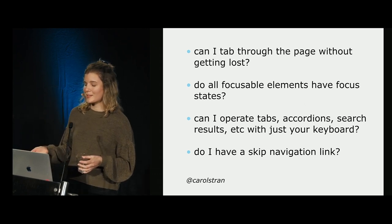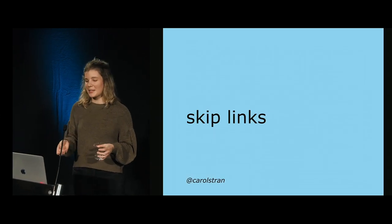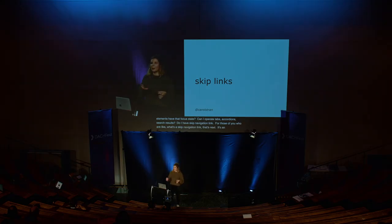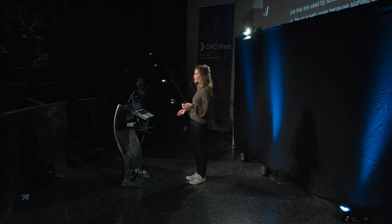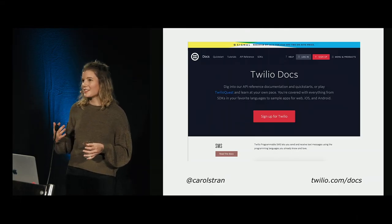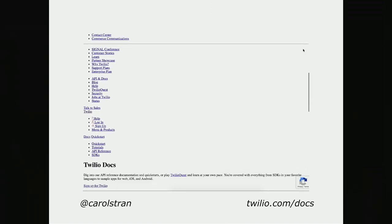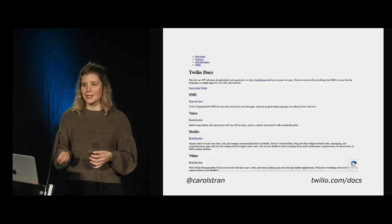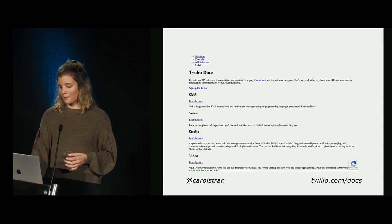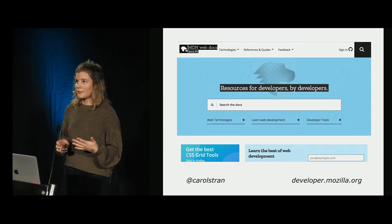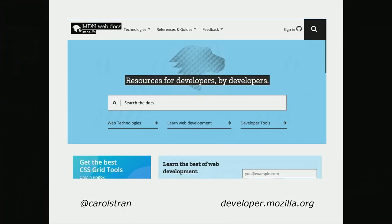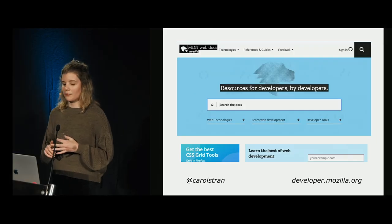Do I have a skip navigation link? Skip links are internal page links mainly used by screen reader users for bypassing repetitive web page content. They're not usually visible because sighted users can skip content by scrolling. Twilio's docs are generally a great example of accessible documentation, but when you take away the linked style sheets, there are many menu elements and it takes a long time to get to the main content using a screen reader. The Mozilla Developer Network Web Docs include three separate skip links: one to skip to main content, one to select your language, and one to skip straight to search.